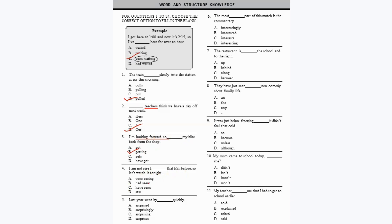Question 4: 'I'm not sure I dashed that film before, so let's watch it tonight.' You're not sure about it, so the answer is: 'I'm not sure I have seen that film before' — option C. Question 5: 'Last year went by dash quickly.' You need a correct adverb: 'Last year went by surprisingly quickly' — option B.